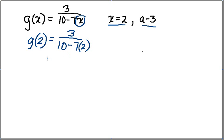That is then equivalent to 3 over 10 minus 14, okay? Because 7 times 2 is 14. And that is going to be equal to 3 over negative 4, okay? Because 10 minus 14 is negative 4. So my answer is minus 3 fourths.